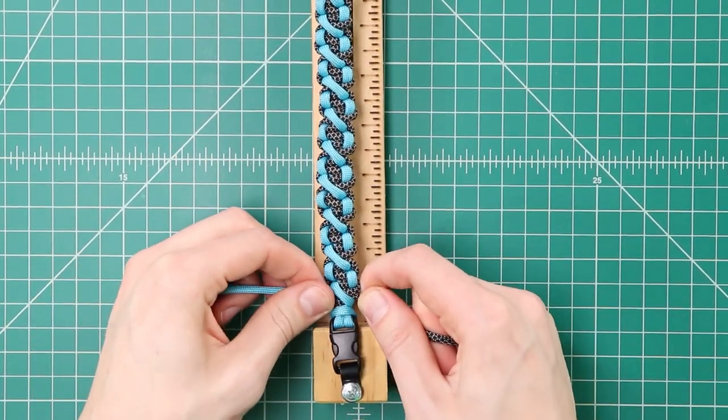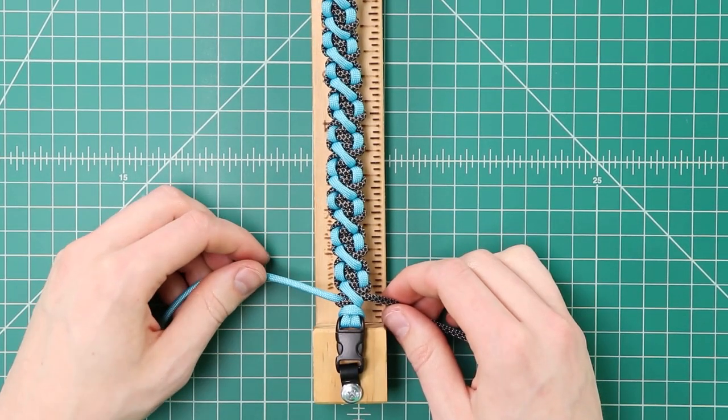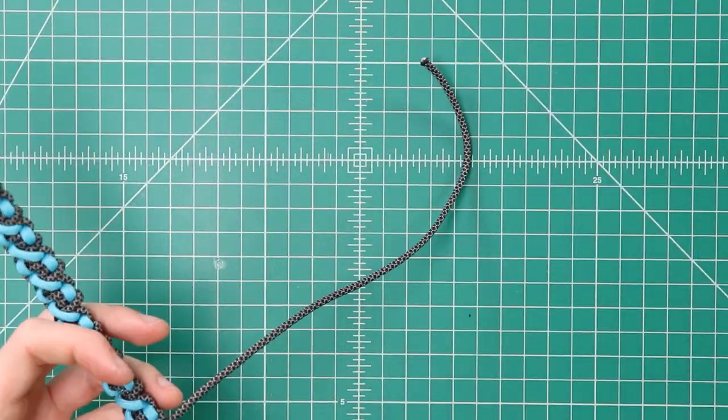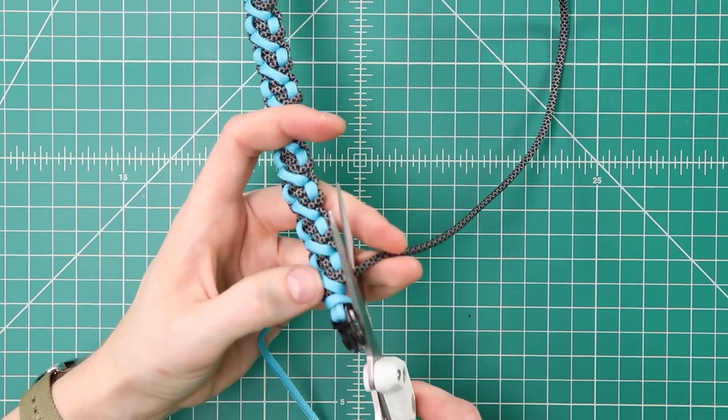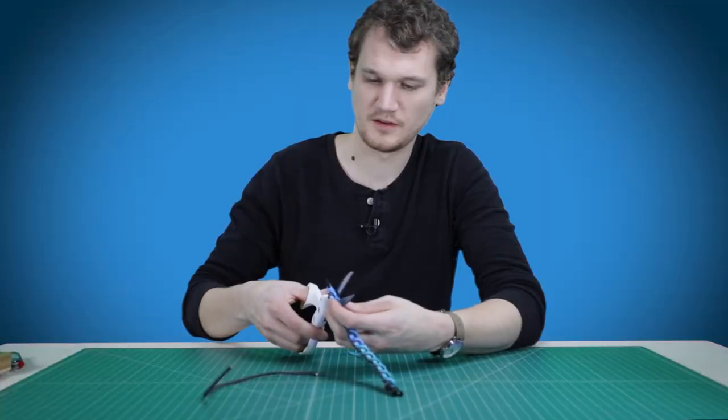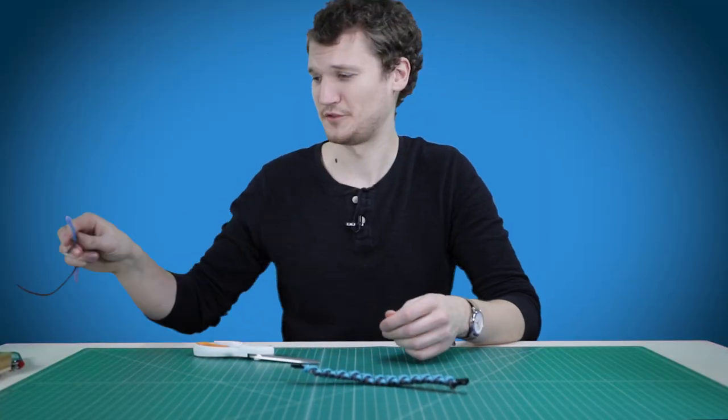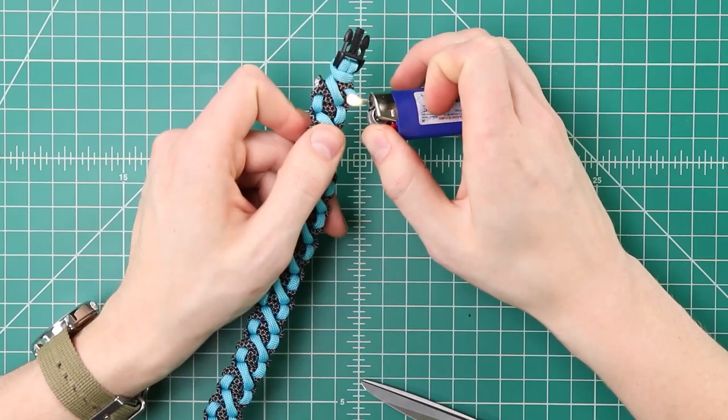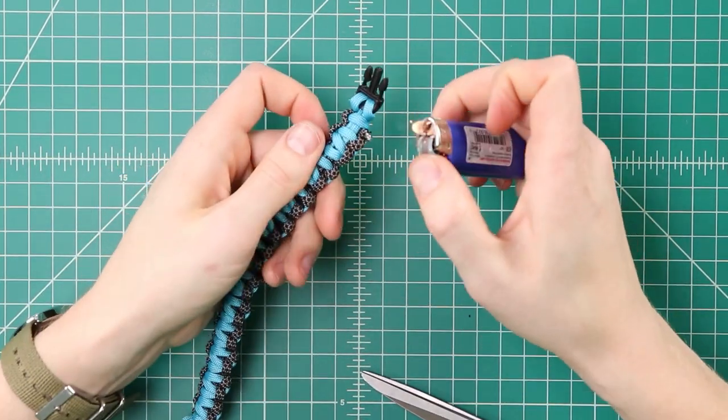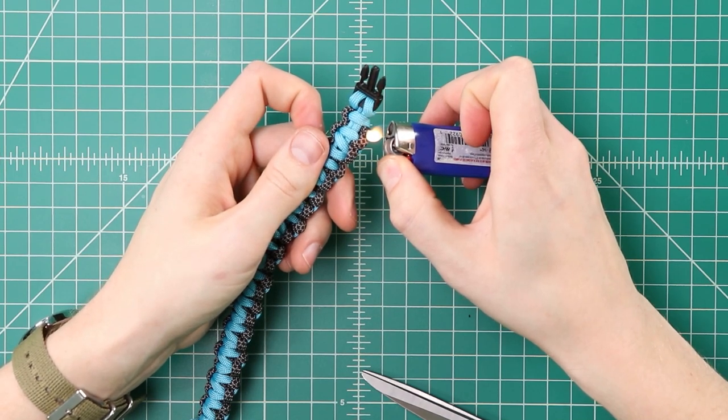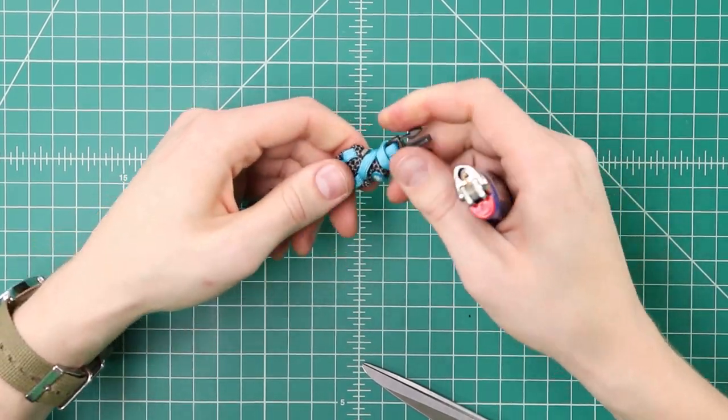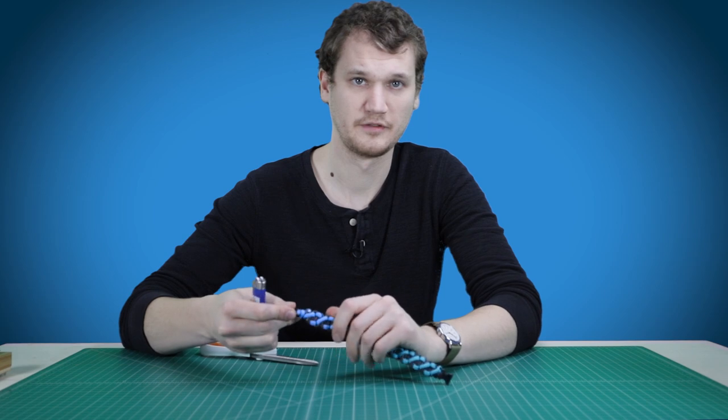Alright. There we are finished. Now what we've got to do is clip our ends and we'll melt it against the bracelet. You guys know the drill by now. Isn't it great that we're not hacking through our cord anymore with these new scissors. Those of you that are new to this, you just want to clip it about an eighth of an inch away from your knot and then flatten it against the bracelet.